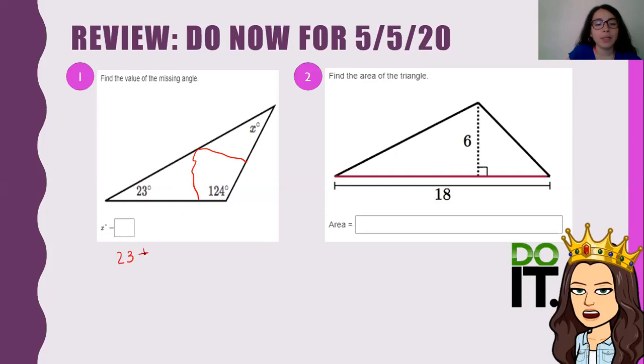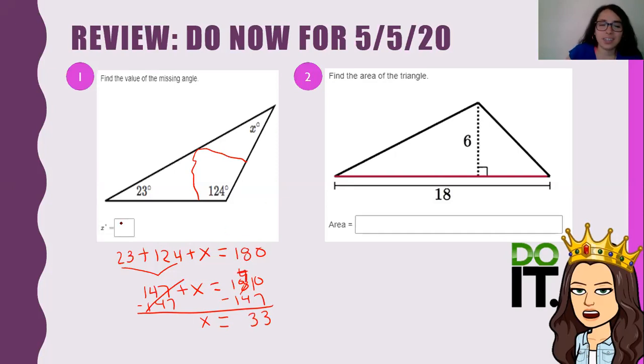So how do we find this answer? Well, we go 23 plus 120 plus X and that's supposed to be equal to 180. So we do 23 plus 124, that's equal to 147, plus X is equal to 180. So now that we have that, we're going to find X by itself. So in order to find X by itself, we do need to subtract 147 from each side. That cancels out and that leaves me with X is equal to, and then that becomes three, and that is 33 degrees is your answer. So make sure to type that in.